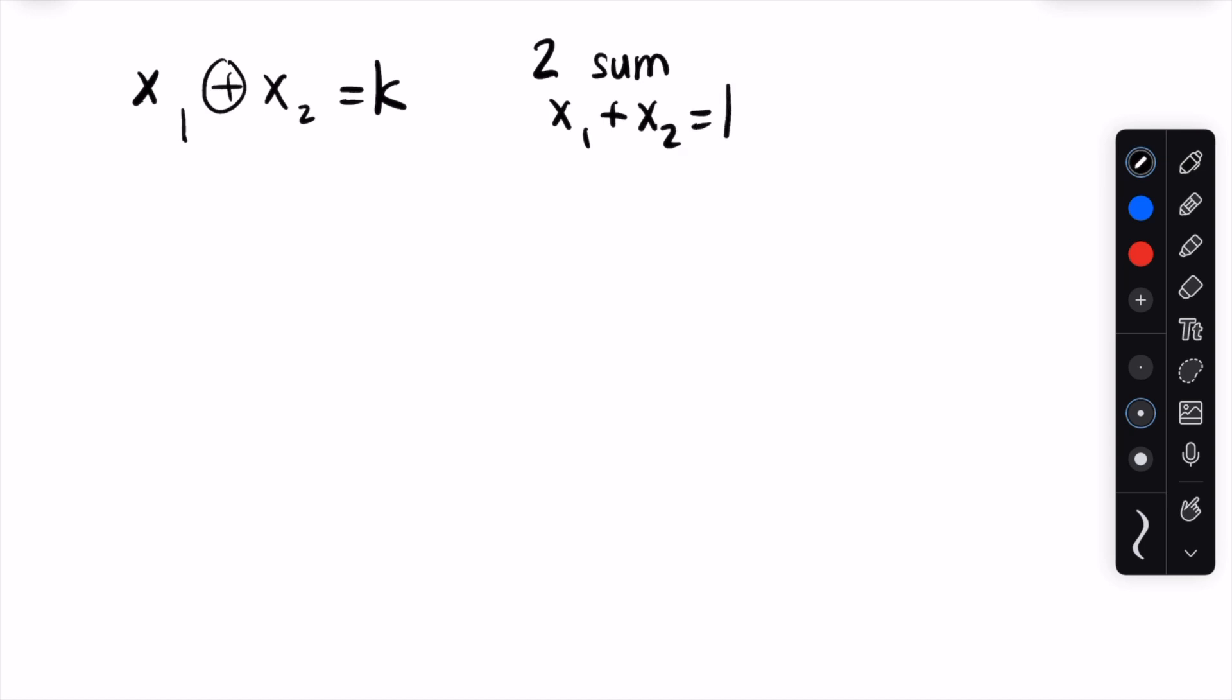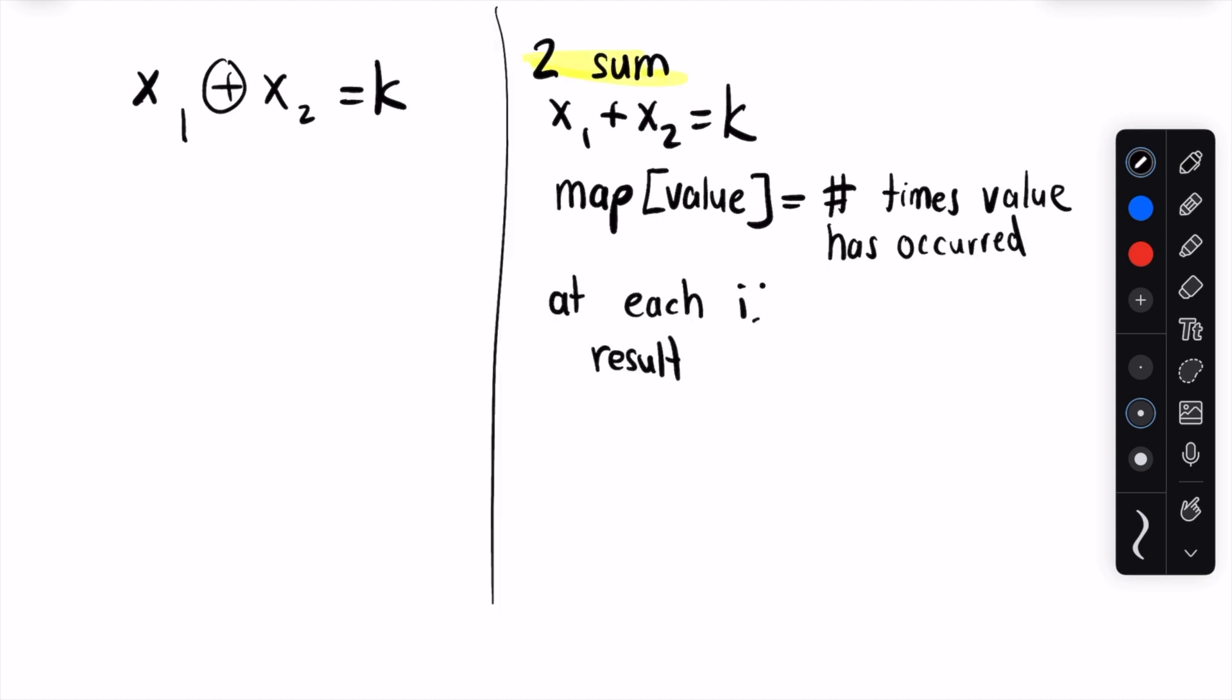Why is that? Well, let's briefly recap. The optimal solution to 2sum is to create a map that maps the values you've seen so far in the array to the number of times each of those values has occurred so far. Then, at each element, you check whether target minus the current element is present in your array. For example, if your target sum is 5 and your current element is 2, you check whether you have seen a 3 previously, because 2 plus 3 equals 5. The xor operation has similar properties to addition and subtraction that we can utilize.